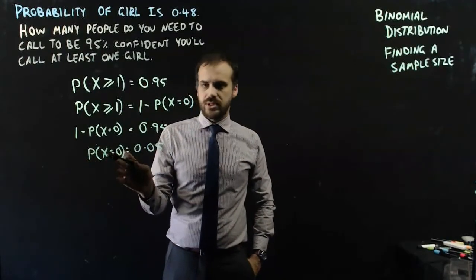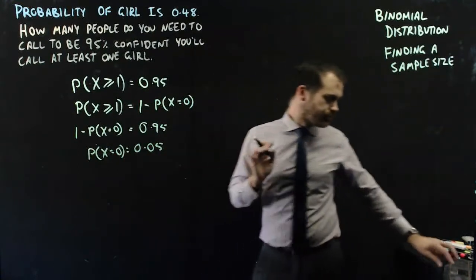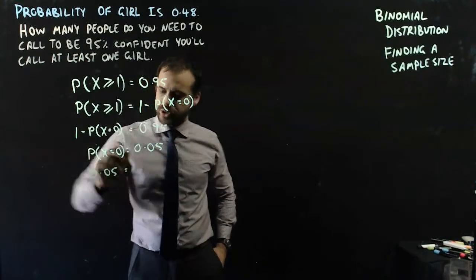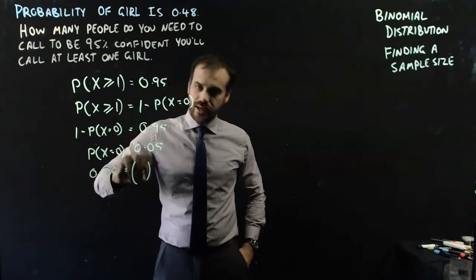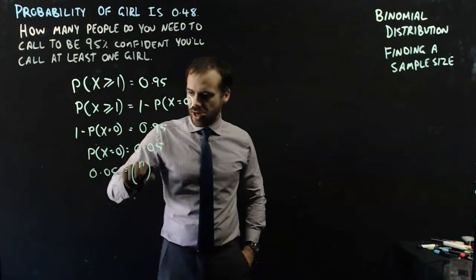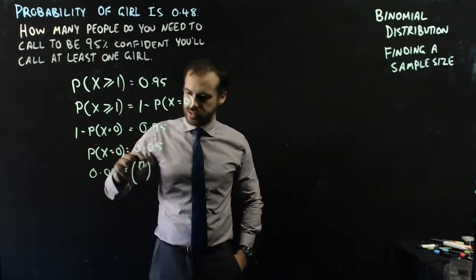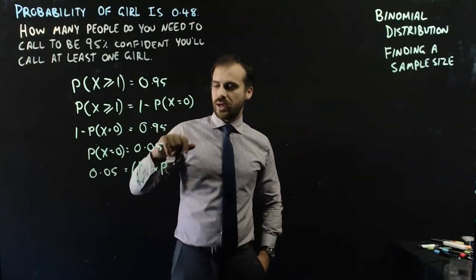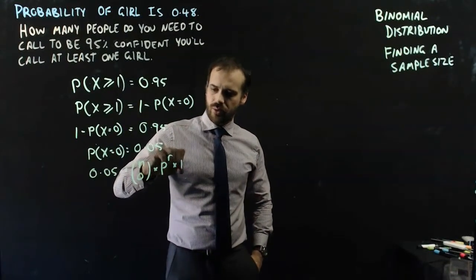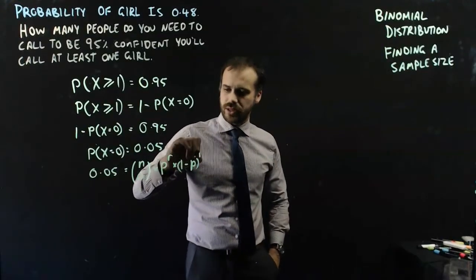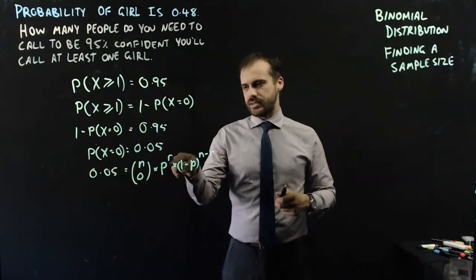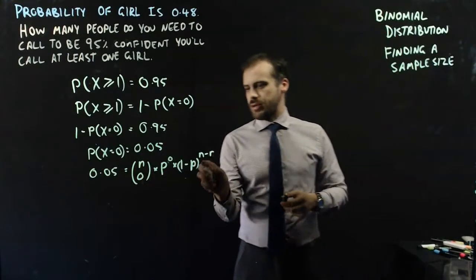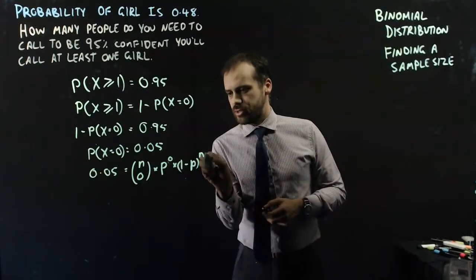The probability that x is equal to 0 is 0.05, so now I can use my binomial probability formula. I can say that 0.05, which is P(x=0), is equal to nCr times p to the power of r, times 1 minus p to the power of n minus r. Here n is the number of trials I'm trying to find, r is the number of successes I'm looking for, which is 0. So n minus r is n minus 0, which is simply n.